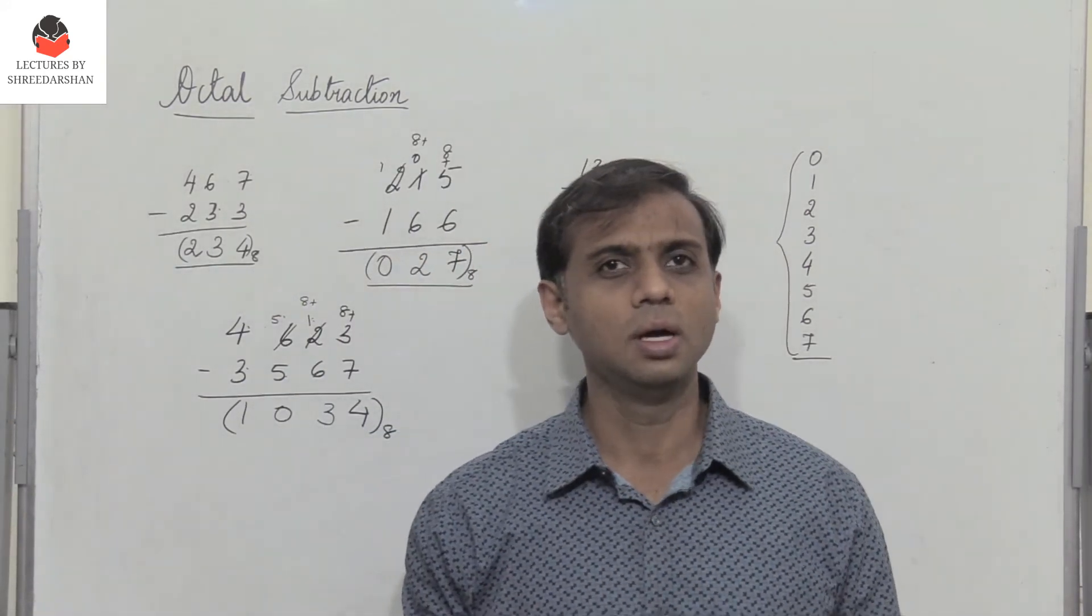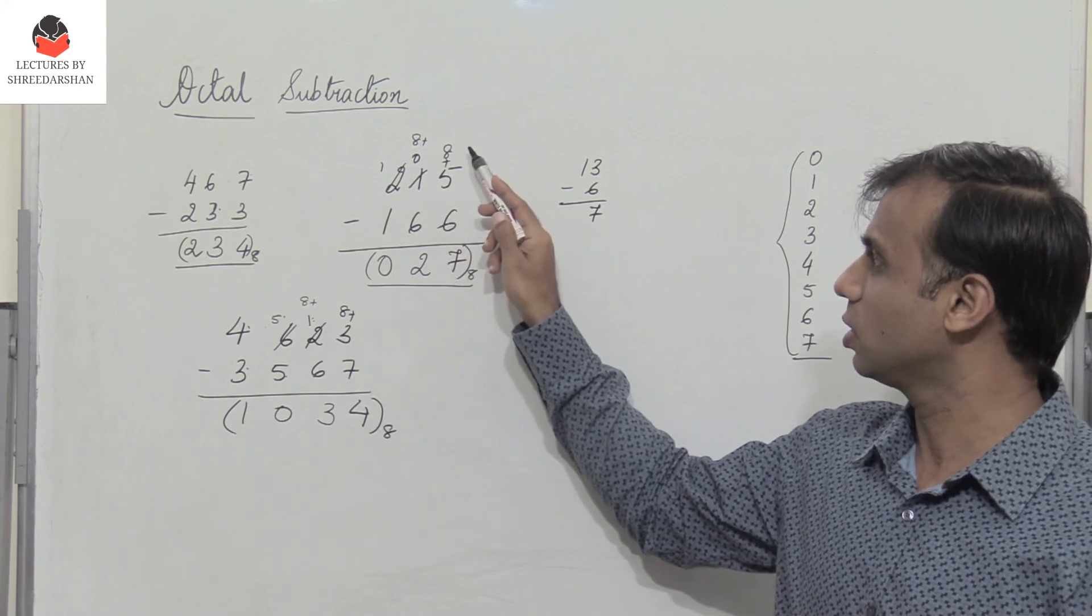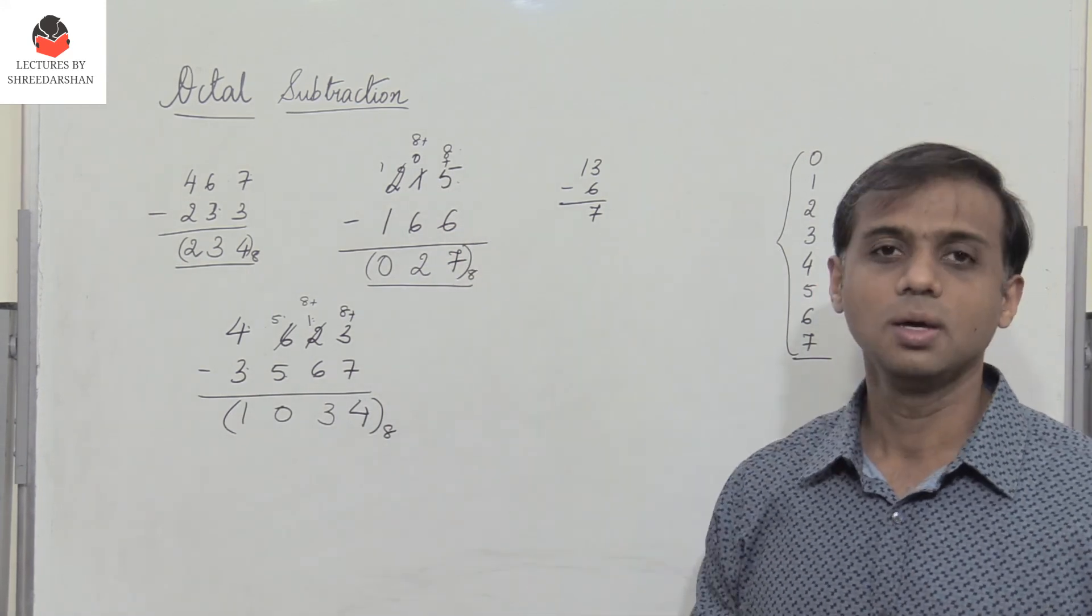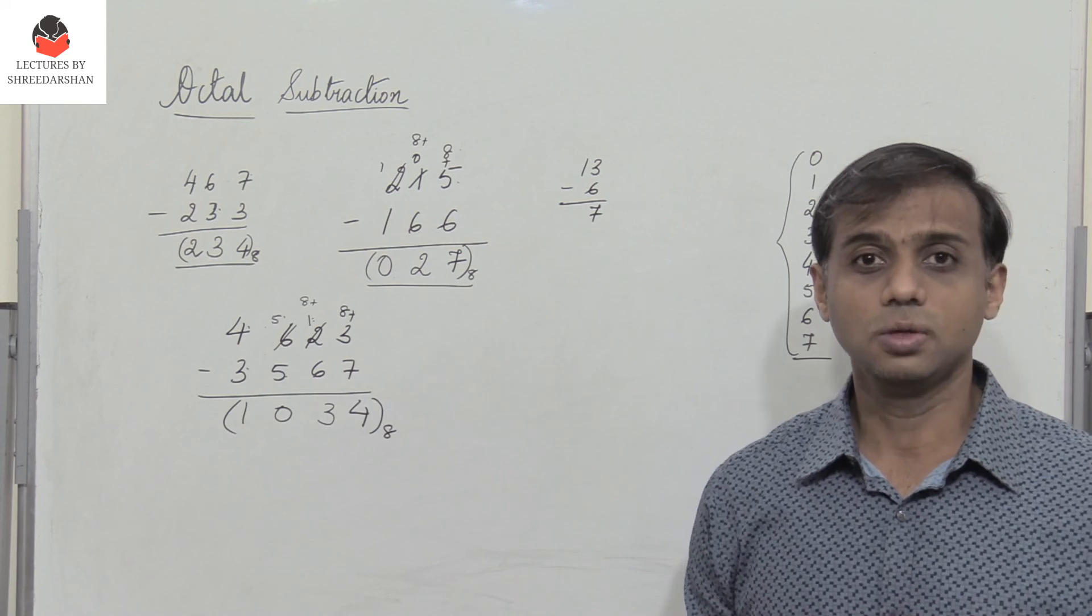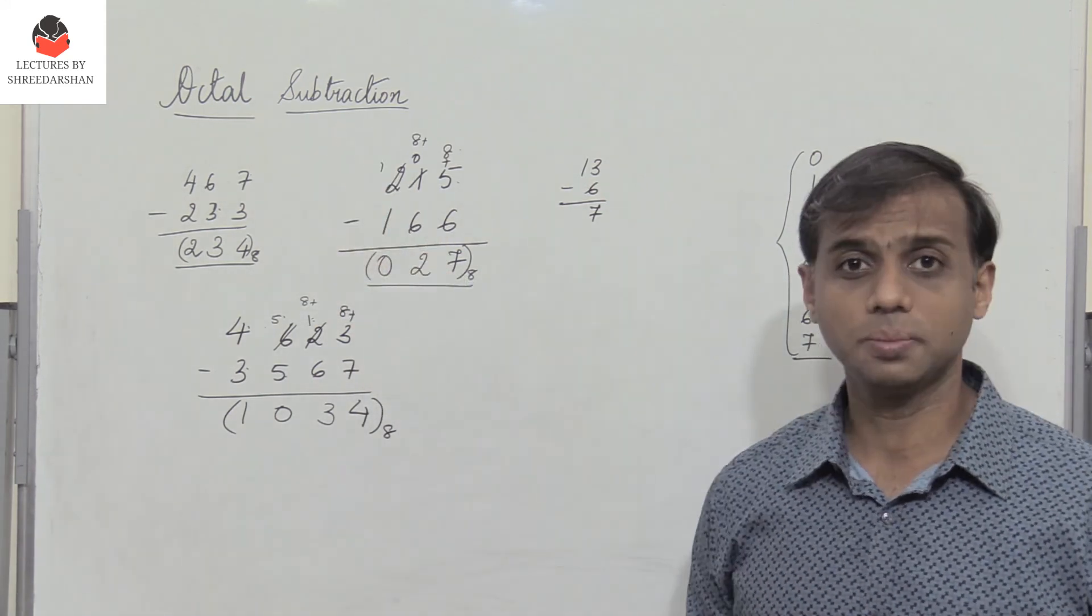It's actually very simple. You just have to remember that when you take a borrow, you have to add 8 to the given number and then you perform subtraction. So this is how we perform octal subtraction.